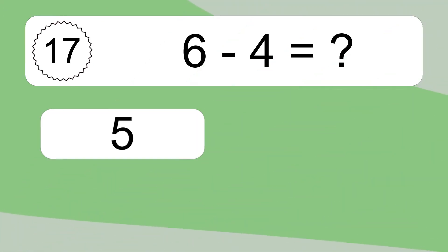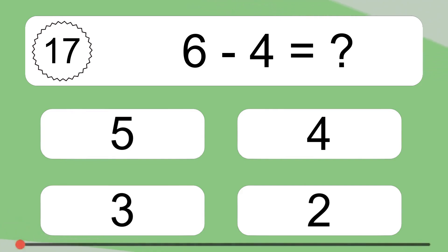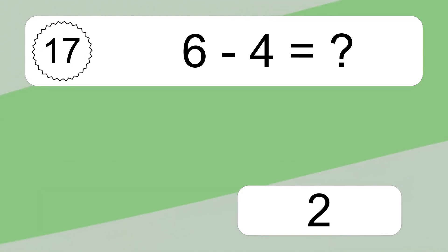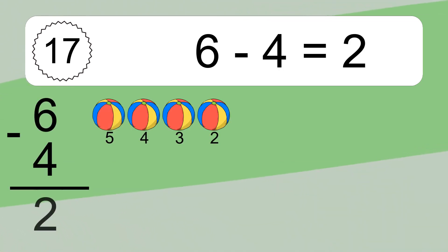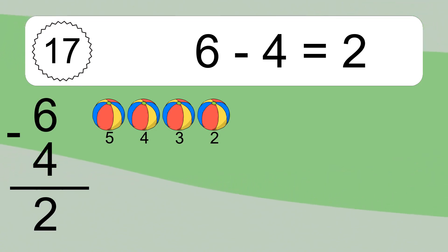6 minus 4 equals what? 6 minus 4 equals 2. Let's count it. 5, 4, 3, 2.